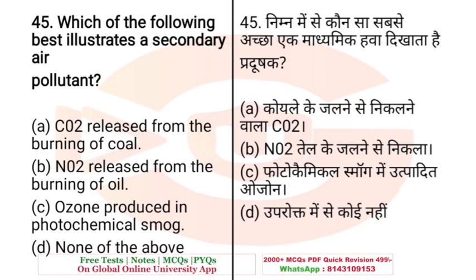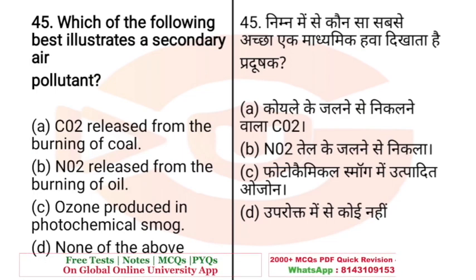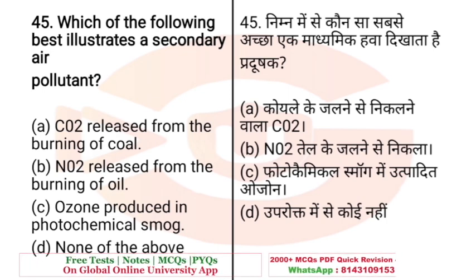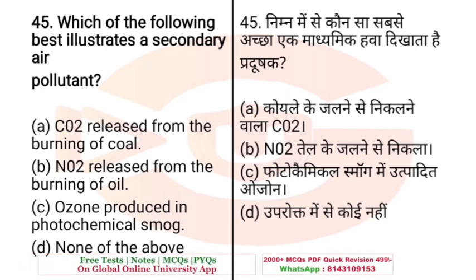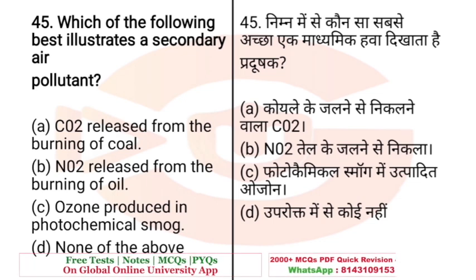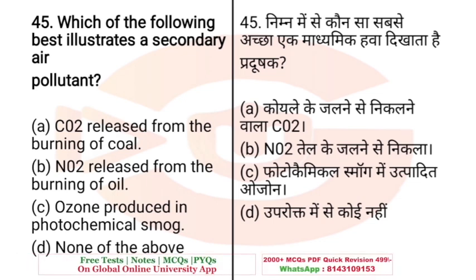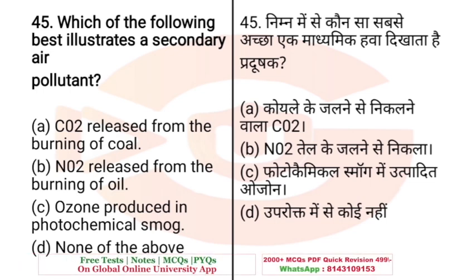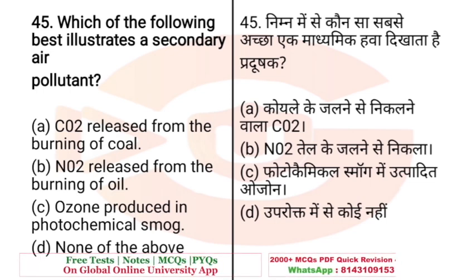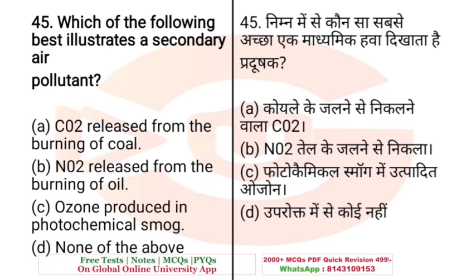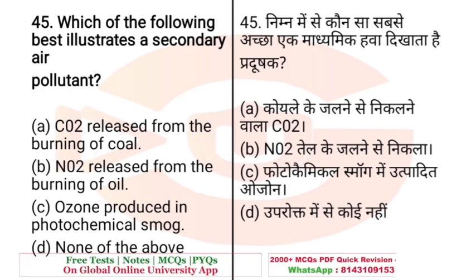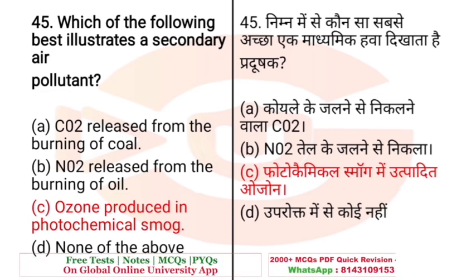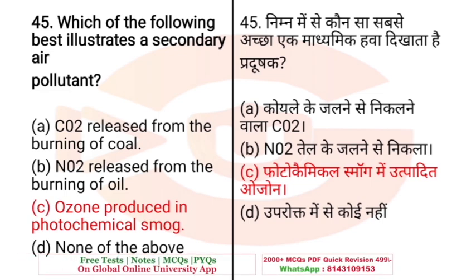Question: Which of the following best illustrates secondary air pollutants? A. CO2 released from the burning of coal, B. NO2 released from the burning of oil, C. Ozone produced in photochemical smog, D. None of the above. The right answer is C — ozone produced in photochemical smog can be called an example of secondary air pollutants.